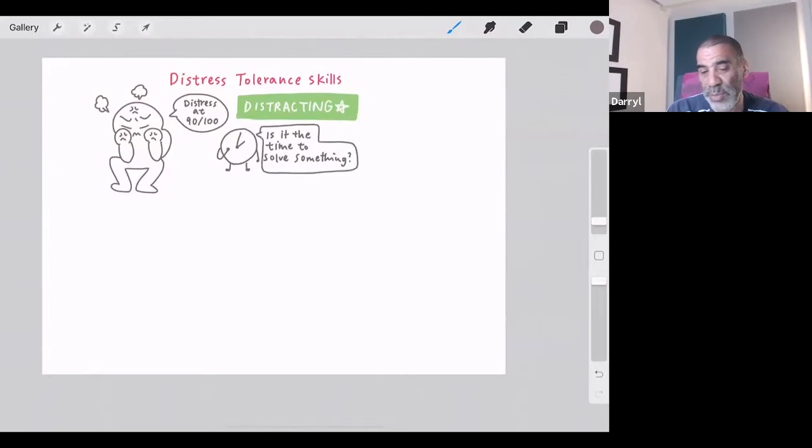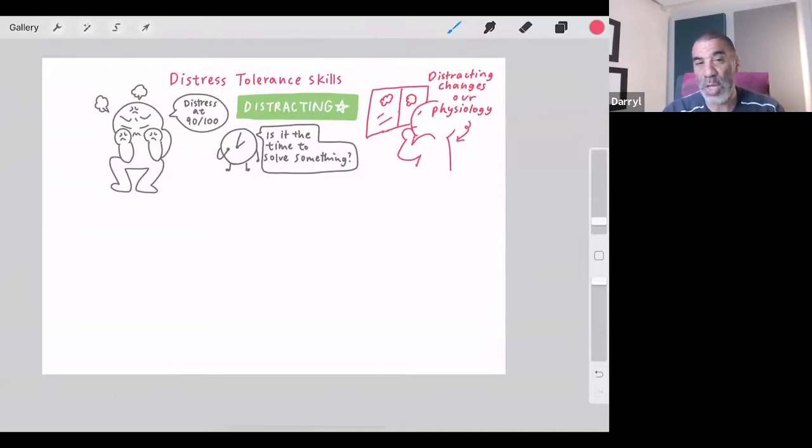The thing about distracting, the benefits of distracting is because what we do is we move our attention and we fill our short term memory with thoughts, images, and sensations. And what this does is in turn, it changes our physiology. And when we change our physiology, we affect our associated responses. So we change our physiology, the way we respond changes slightly. And then when we're distressed, what they call emotional expressive behavior comes up.